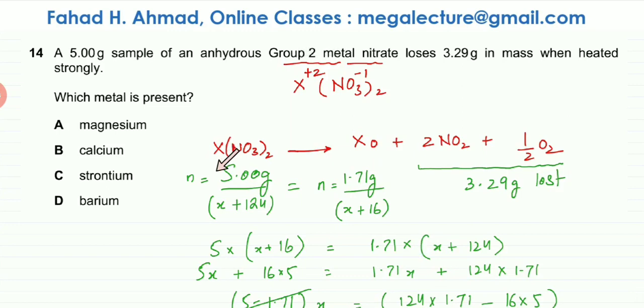So X is 40.1 over here. Which metal has an AR of 40.1? If you look at the periodic table, it's going to be option B - calcium has an AR of 40.1.